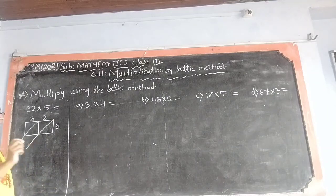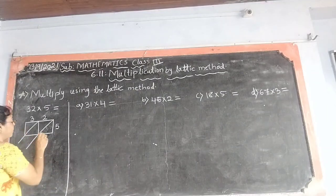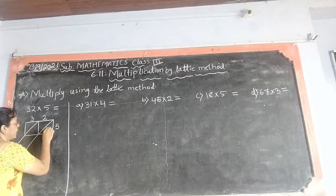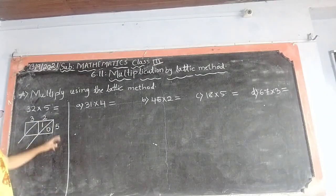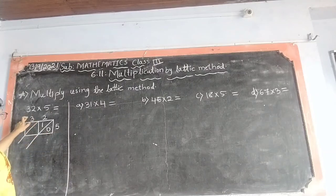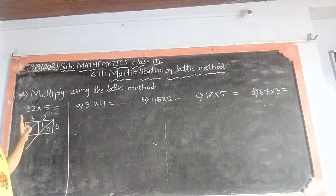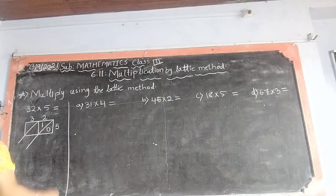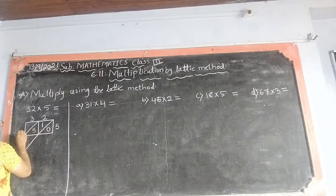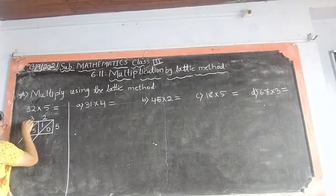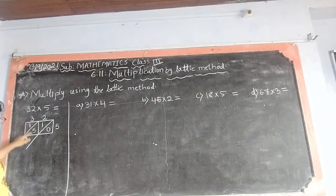So, 10 what we are writing now. So ones place, what it will become? 0. So 0 we will write here. 1 we will write here, at the top. Then, 5 threes are 15. 5 ones are 5, 5 twos are 10, 5 threes are 15. For 15, 5 we will write in ones place and 1 we will write on tens place here, like this.